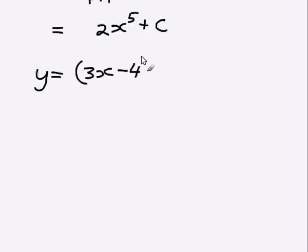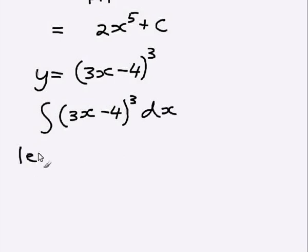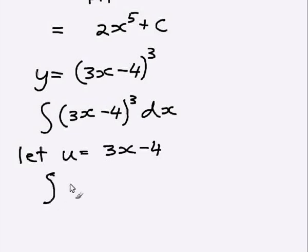Sometimes you have more complicated functions that you need to integrate. Say this one, which is 3x minus 4 to the power 3. You can't straight out integrate this. First I'm going to write the proper way of showing this: I put the integral sign, put the function 3x minus 4 all to the power 3, and then put dx after it. Now working it out, I have to use a few tricks. What I can do is use a variable — I'm going to use u to equal what's inside the brackets. So I'm going to let u equal 3x minus 4. Now I can rewrite the integral, but instead of 3x minus 4 I'll just write u. So it becomes the integral of u cubed dx.